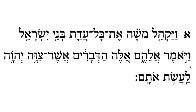Then we have another 'va' sound. A yud with a kholam gives 'yo,' and the aleph is silent, so 'vayyo.' A mem with a segol and reish gives 'mer' — 'vayomer,' meaning 'and he said.' Then an aleph with khataf patach gives 'a,' a lamed gives 'le' — 'ale.' A he with a segol and mem gives 'hem' — 'alehem,' meaning 'to them.' So 'vayomer alehem' — 'and he said to them.'